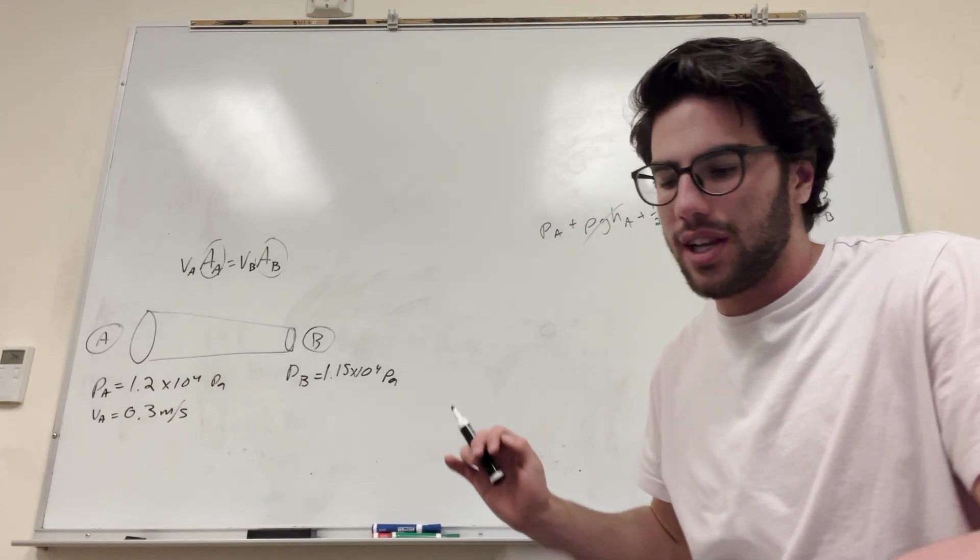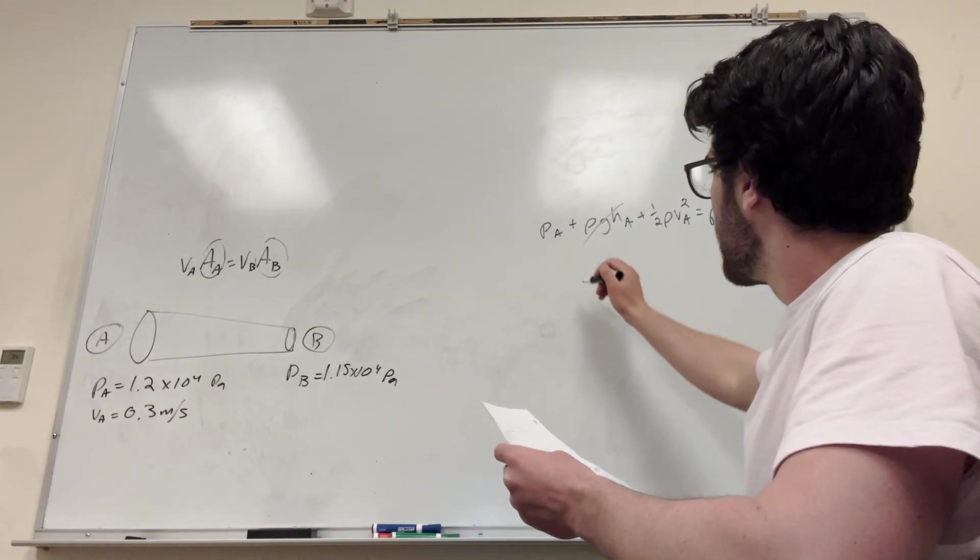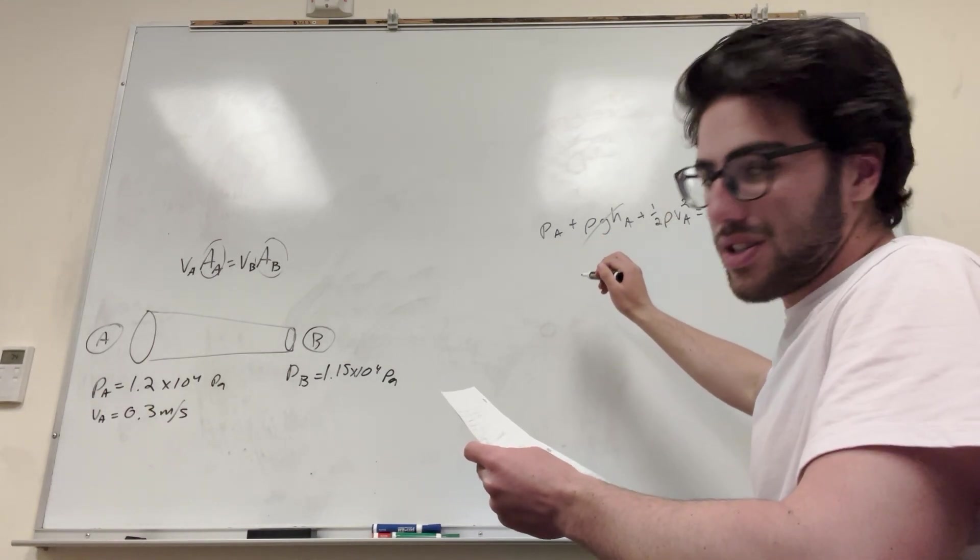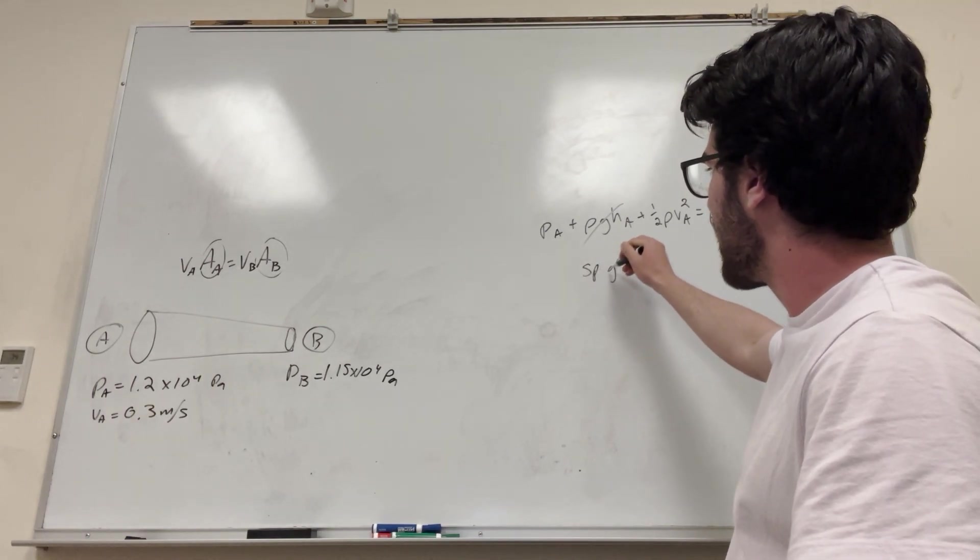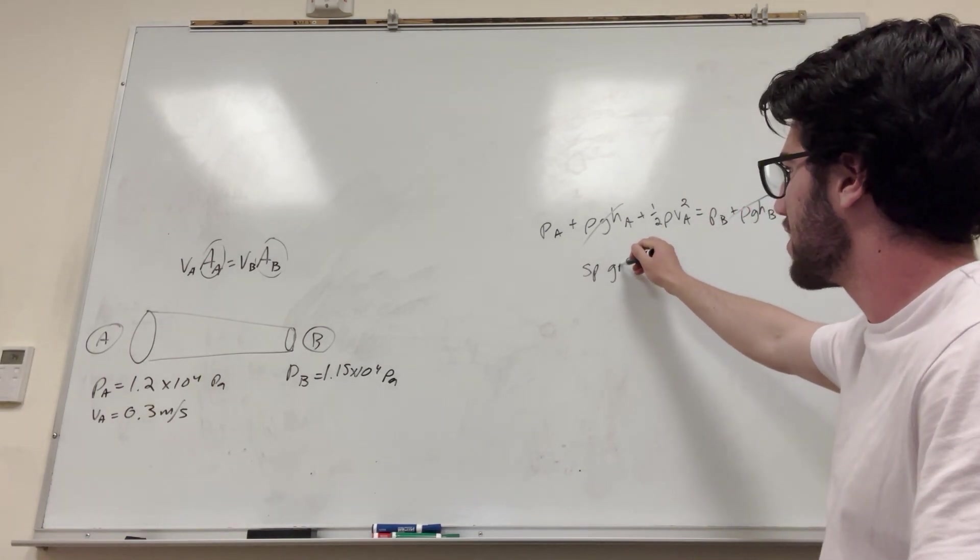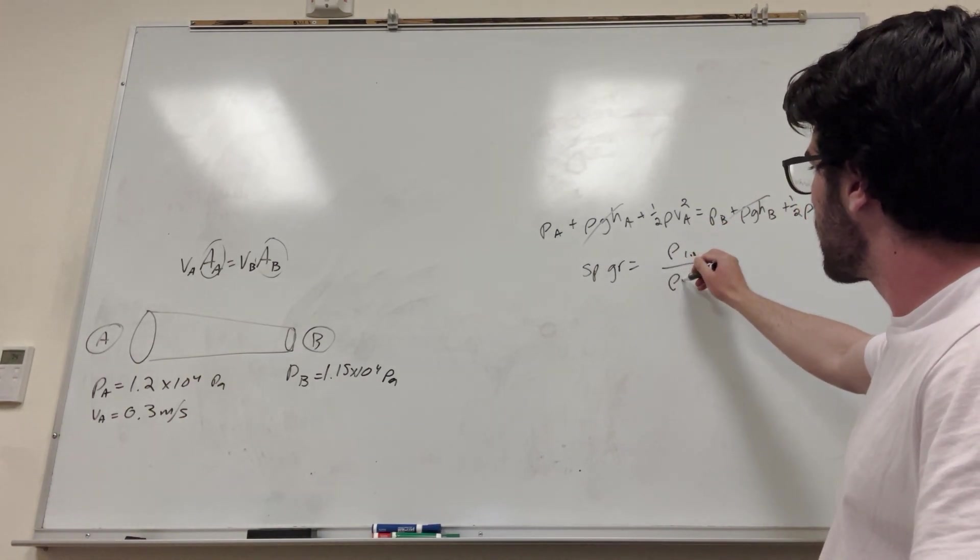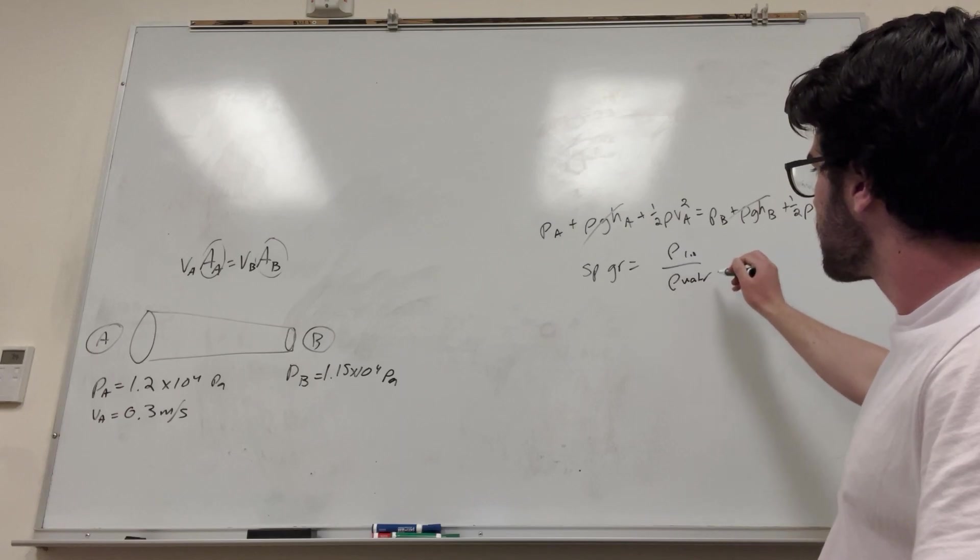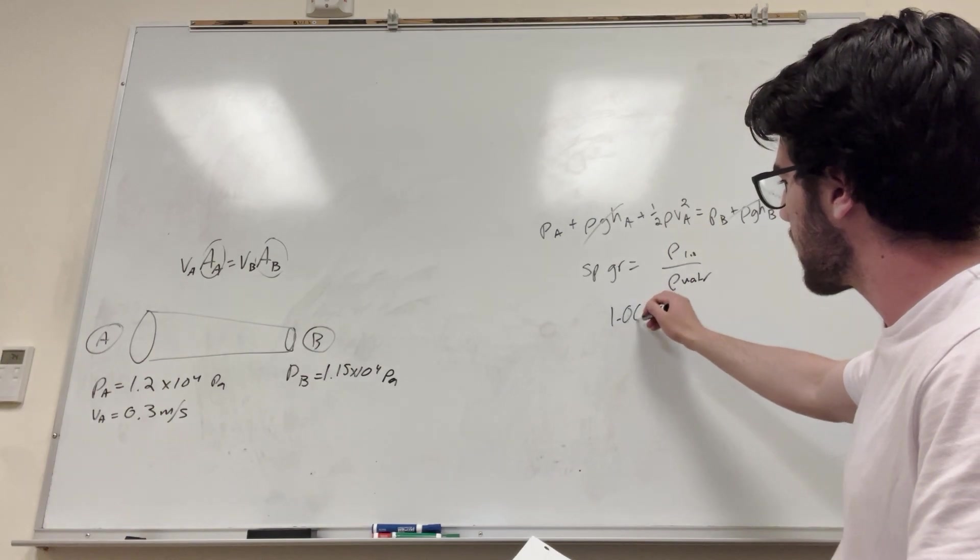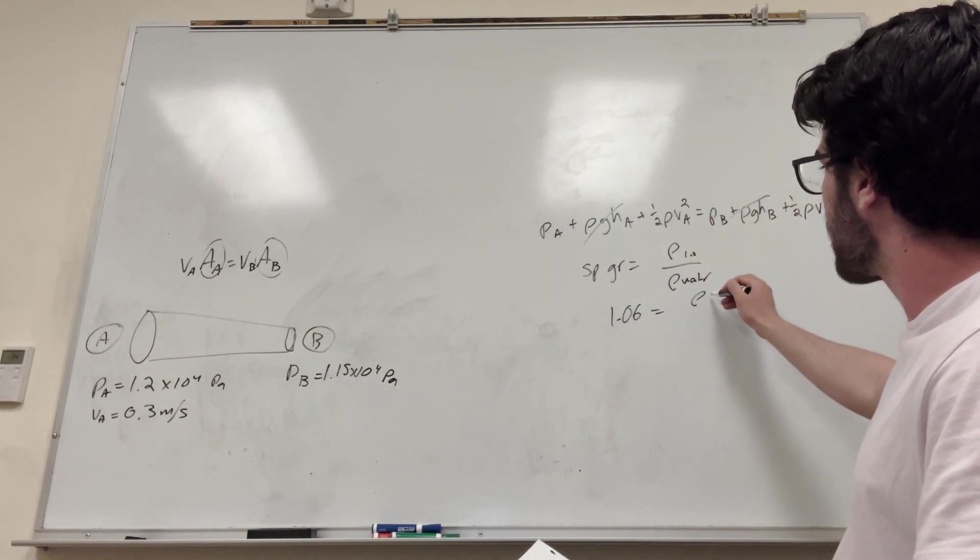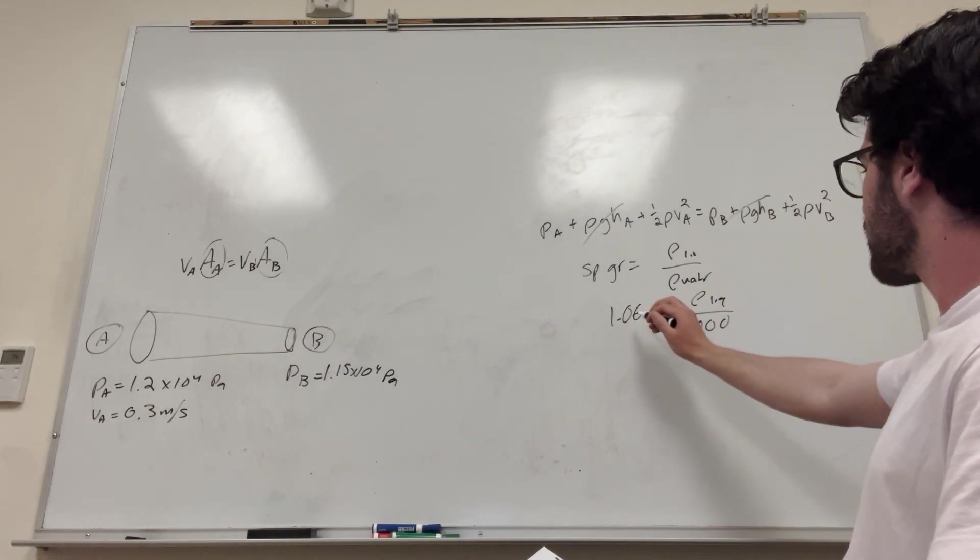We also need to find density. So it gives us the specific gravity of our blood. So it says the specific gravity of the blood is 1.06. So we need to know what specific gravity is. So specific gravity, I don't know what the notation for it is, but that's the density of whatever liquid over the density of water. Density of water is 1,000. So we know that the specific gravity is 1.06.